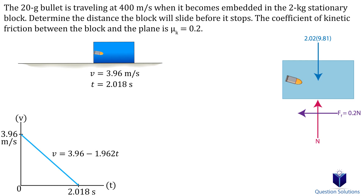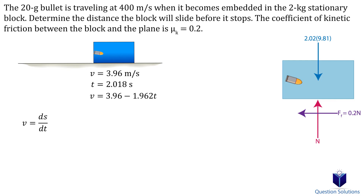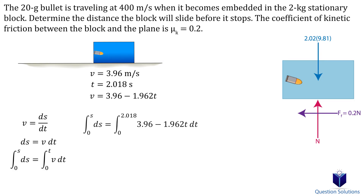We need to relate velocity, time, and displacement together using the kinematics equation velocity equals ds over dt. Isolating for ds and integrating gives an equation for displacement. Plugging in the velocity equation with time from zero to 2.018 seconds, solving gives us 3.996 meters — the distance the block traveled before stopping.